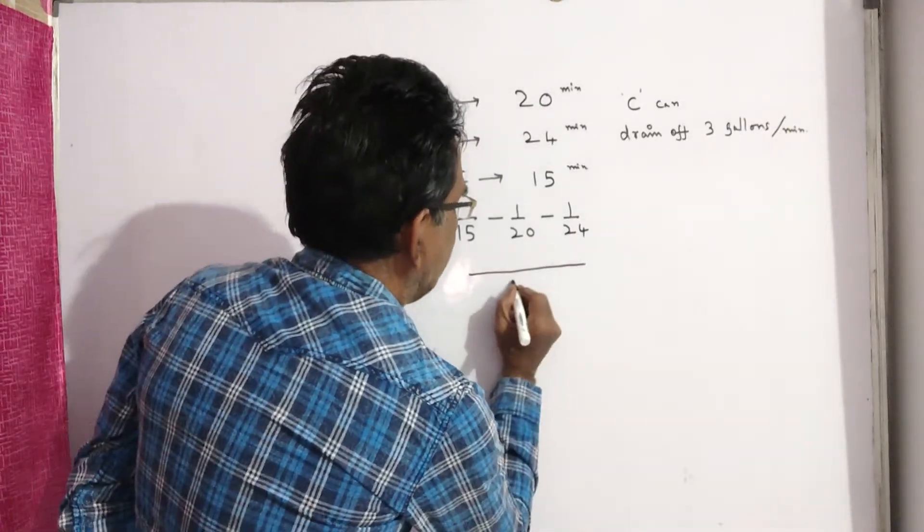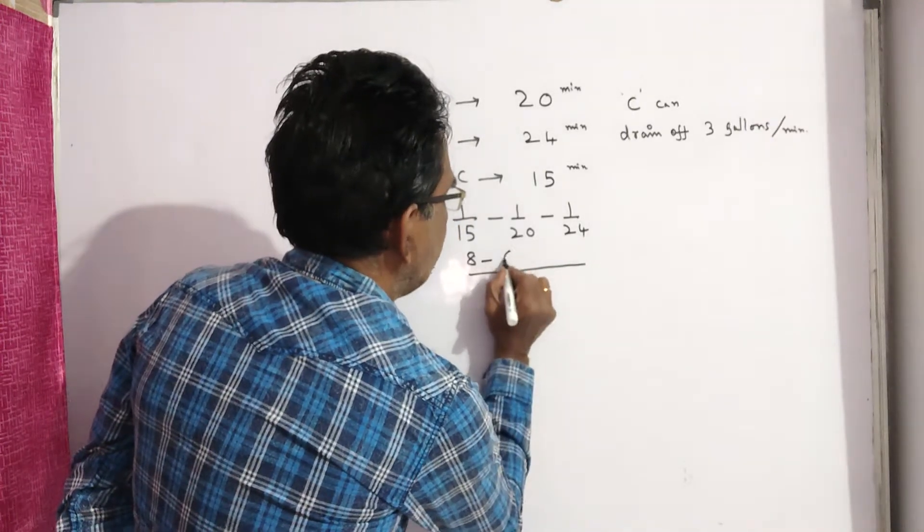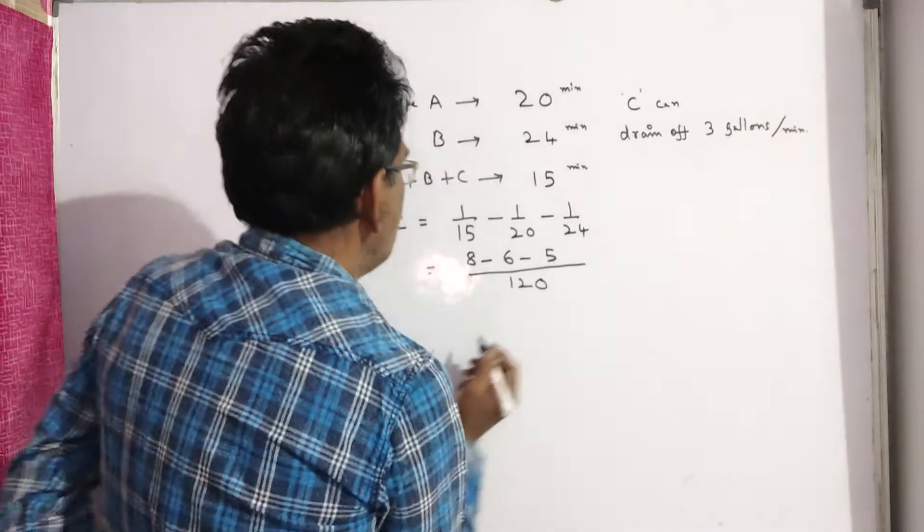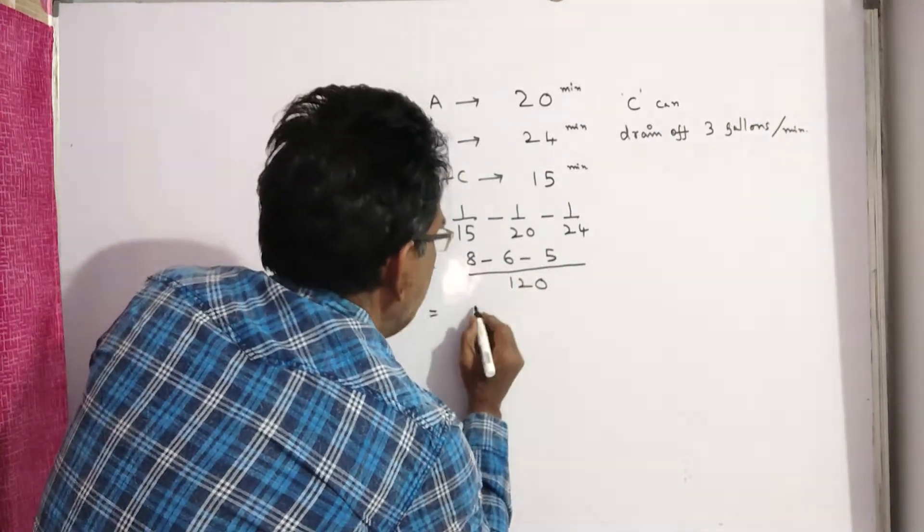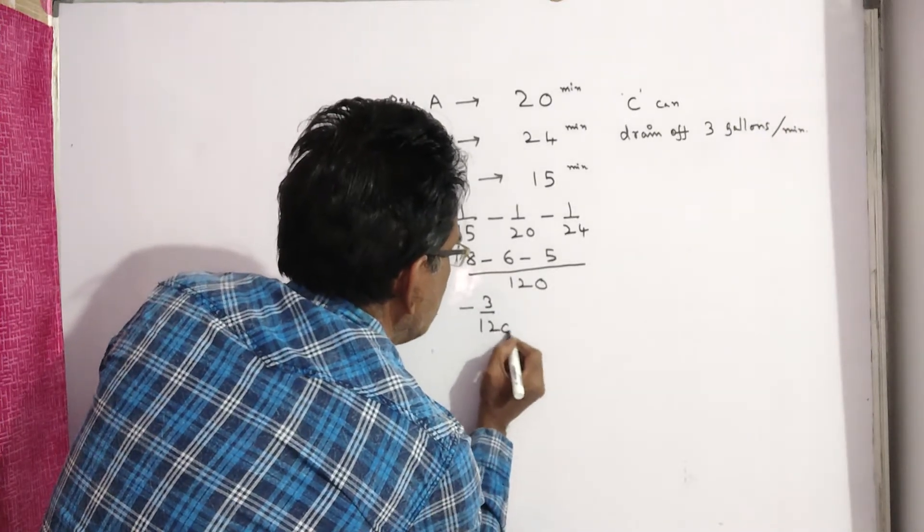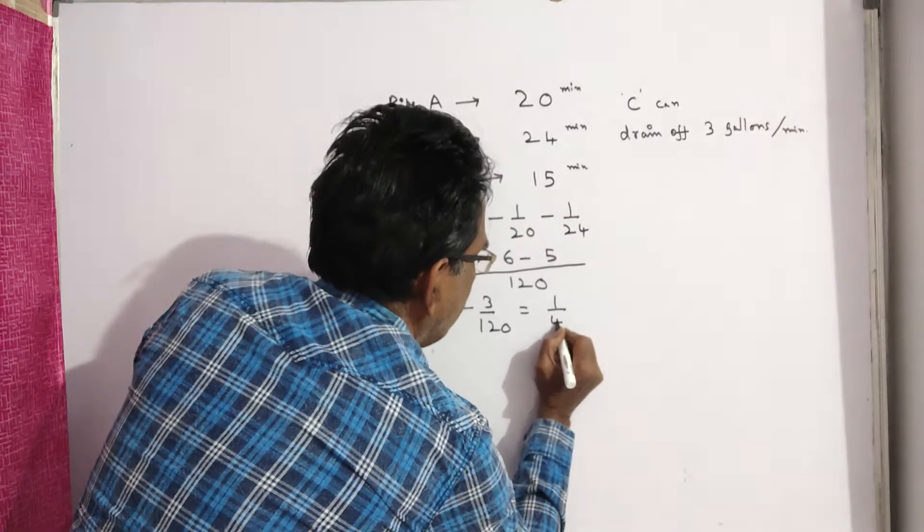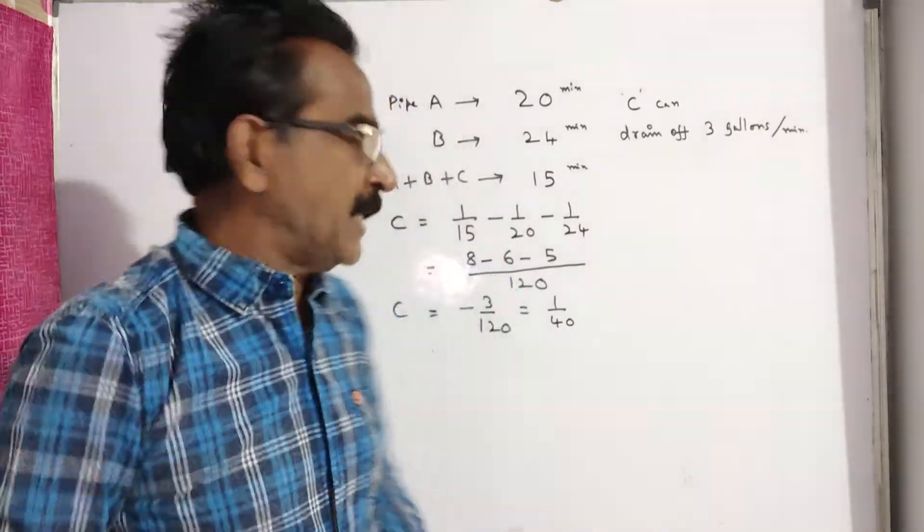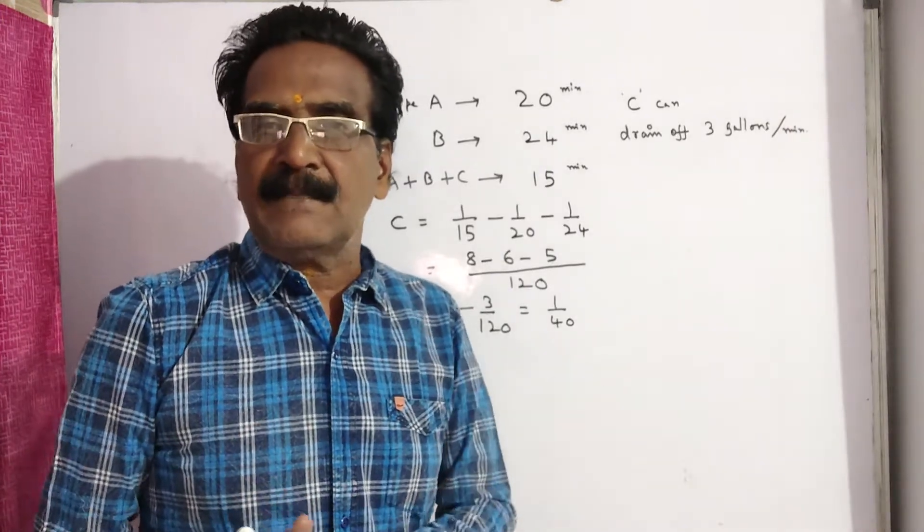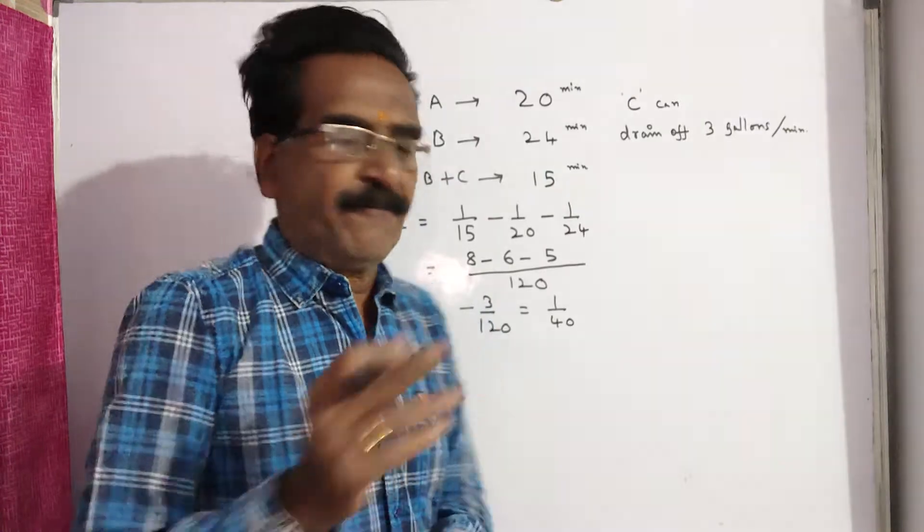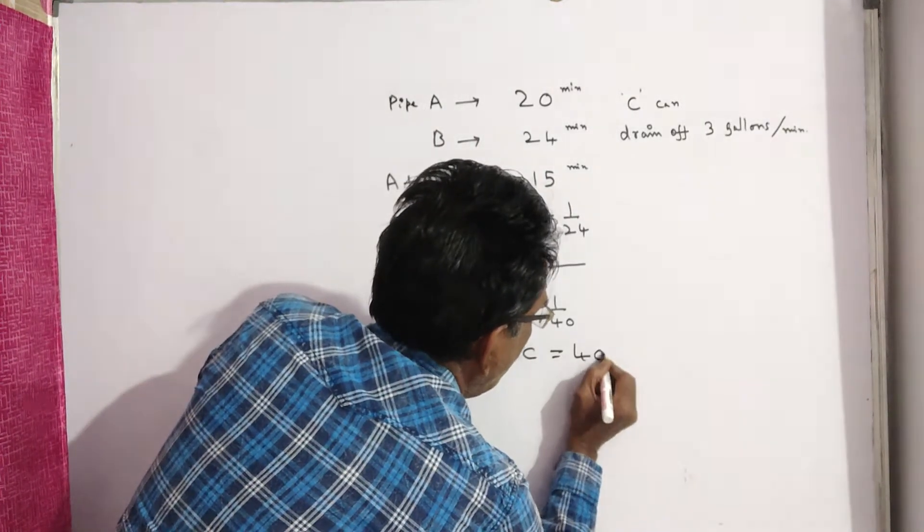C is equal to 1 by 15 minus 1 by 20 minus 1 by 24, which equals 1 by 120 minus 3 by 120. You can ignore this. So C can empty, the work done by C is equal to 1 by 40. It means C can empty a full tank in 40 minutes.